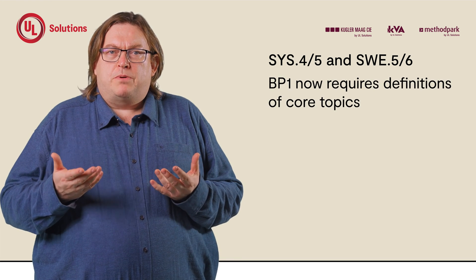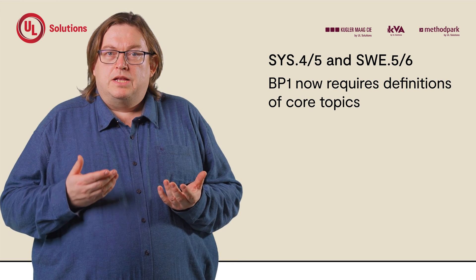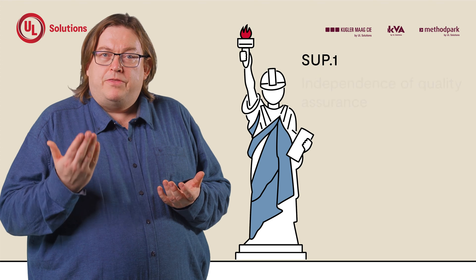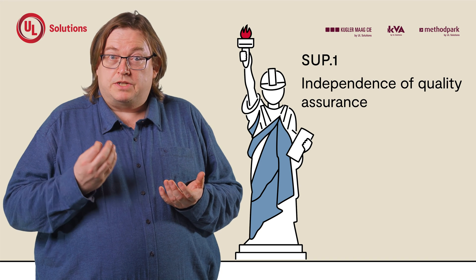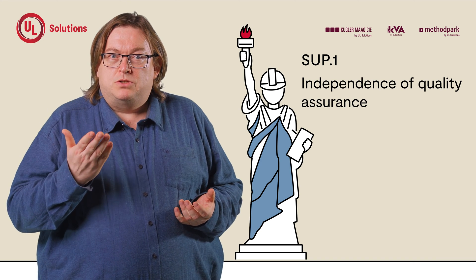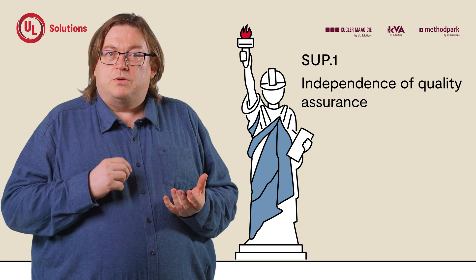Here are some examples from the processes: SYS 4 and 5, and SWE 5 and 6. Although a strategy is no longer required, Base Practice 1 now requires definitions of core topics that were previously part of the strategy — so this doesn't change much, but it better aligns with standards like ISO 26262 or ISO 21434. For SUB 1, emphasis on the independence of quality assurance has increased, which is a significant advantage. Base Practice BP2 now includes essential aspects of the previous quality management strategy, so this topic is still addressed.